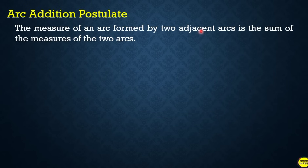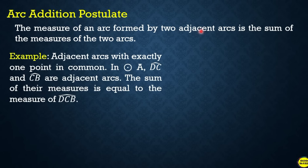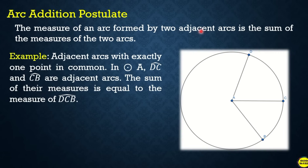Arc Addition Postulate: the measure of an arc formed by two adjacent arcs is the sum of the measures of the two arcs. Adjacent arcs share exactly one point in common. In circle A, arc DC and arc CB are adjacent arcs, so the sum of their measures equals the measure of arc DCB: arc DC plus arc CB equals arc DCB.